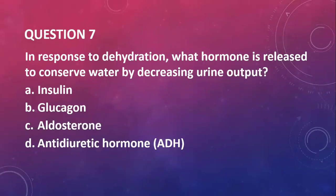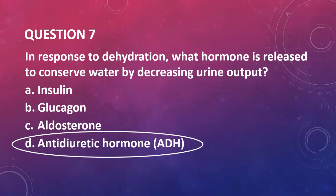Question seven: in response to dehydration, what hormone is released to conserve water by decreasing urine output? Insulin, no. That controls glucose. Glucagon, no, also glucose control. Aldosterone, no, that's for sodium control. Antidiuretic hormone, yes.